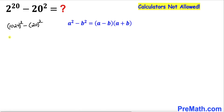Now let's recall this famous identity: a squared minus b squared. We are going to apply it over here. So this could be written as (1024 minus 20) times (1024 plus 20).